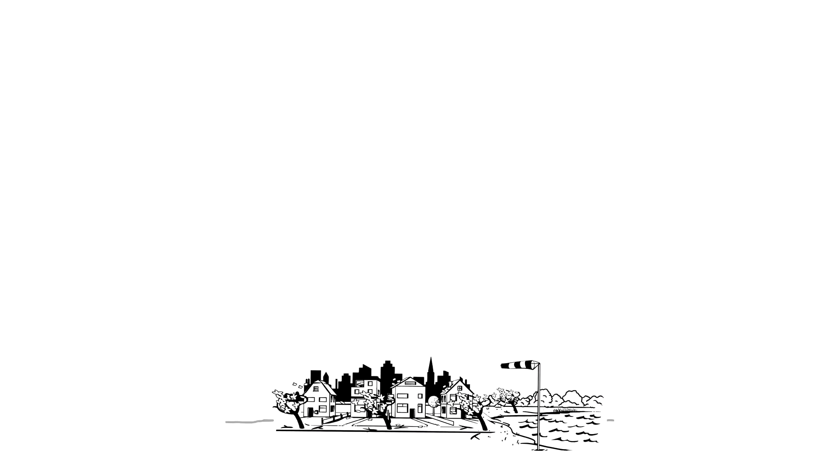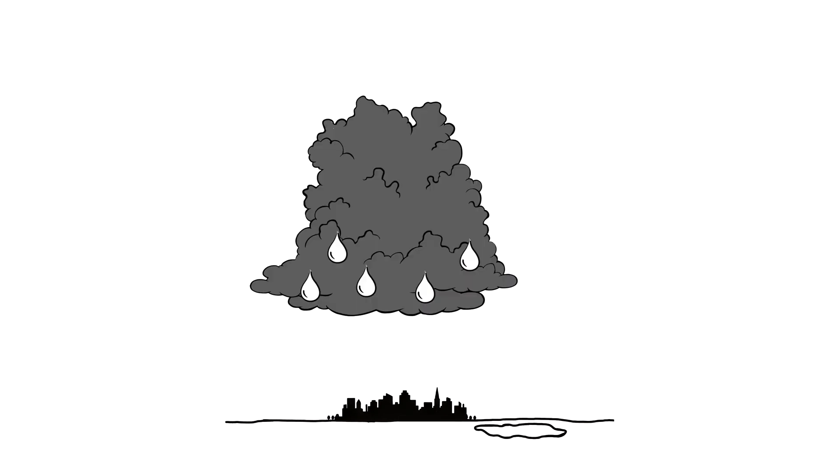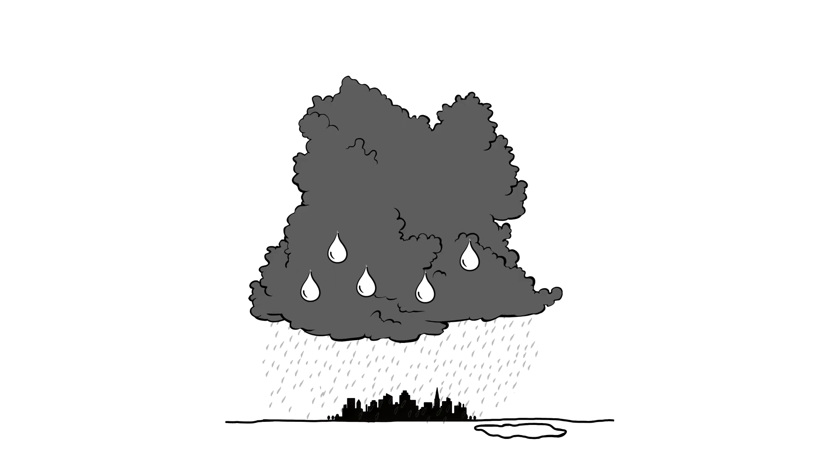The water vapor in the cold air condenses. At first small and then even bigger clouds are formed out of the water vapor. Those are called rain clouds.